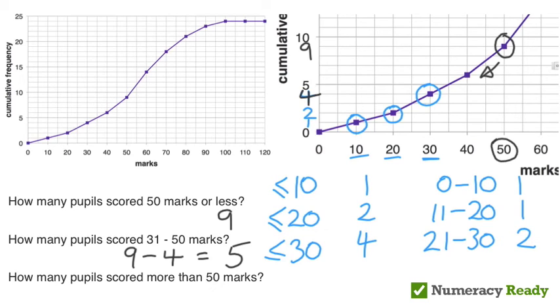Finally how many pupils scored more than 50 marks? The best way to do this is by using our full graph on the left and reading off how many pupils there were in total. There were 24. Now we know that there were 9 pupils who scored 50 or less because we used that for the question before and there were 24 pupils in total. So if we calculate 24 less 9 which gives us 15 that should give us the number of pupils scoring more than 50 marks.